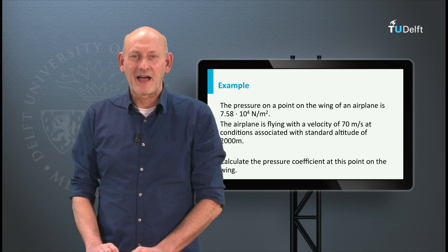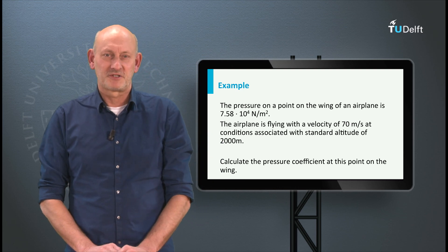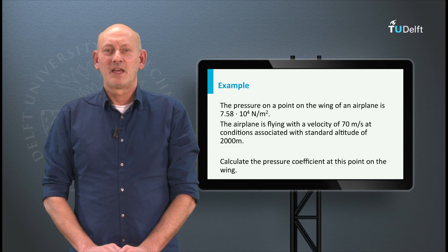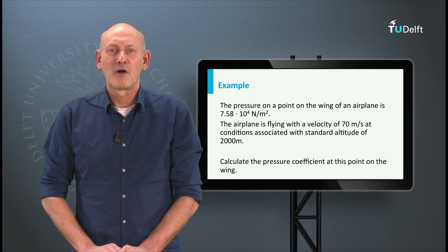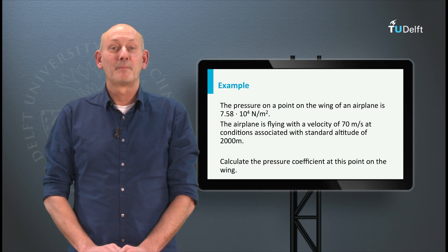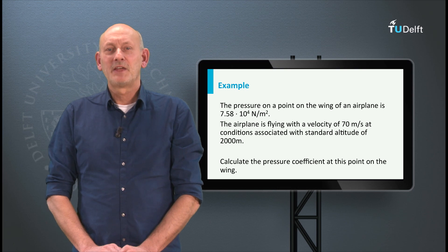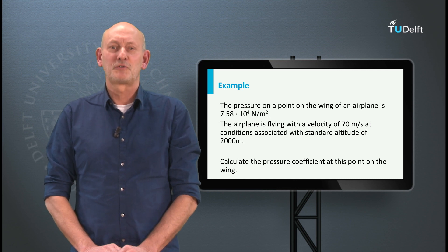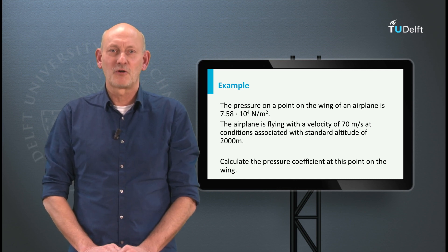Here is an example of how to determine the pressure coefficient. The pressure on a point on the wing of an airplane is 7.58 times 10 to the power 4 N per square meter. The airplane is flying with a velocity of 70 meters per second at conditions associated with standard altitude of 2000 meters. Calculate the pressure coefficient at this point on the wing. Now here I have the airfoil of the wing.